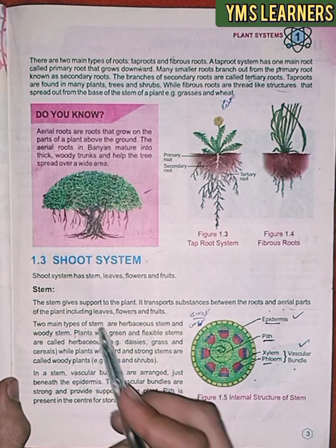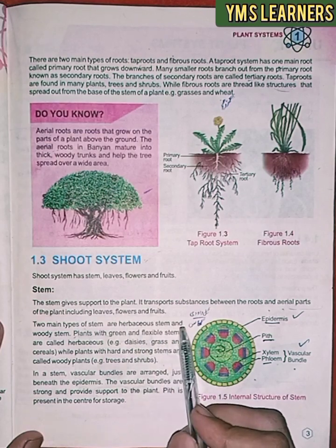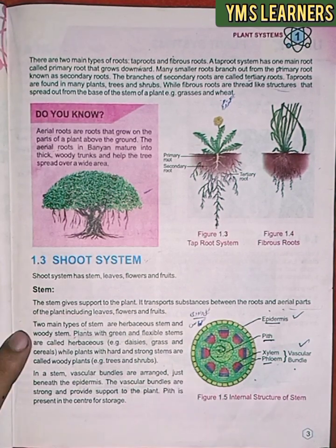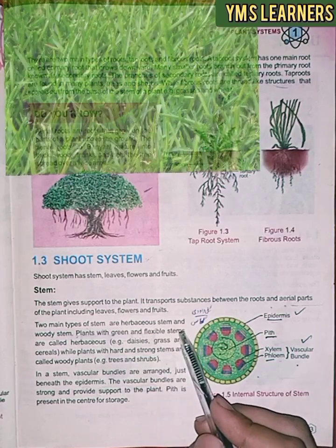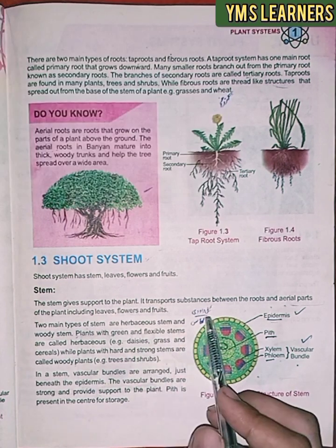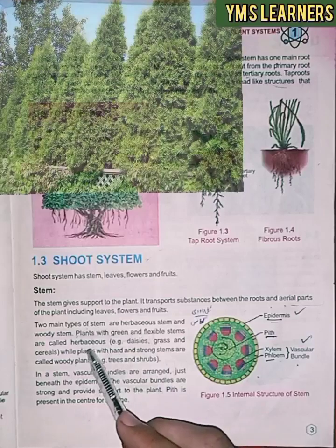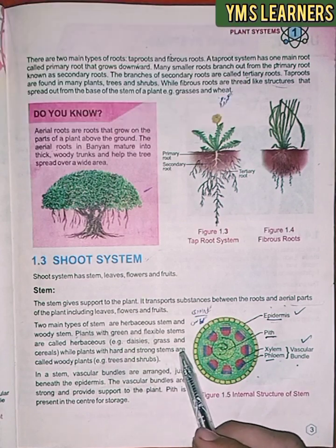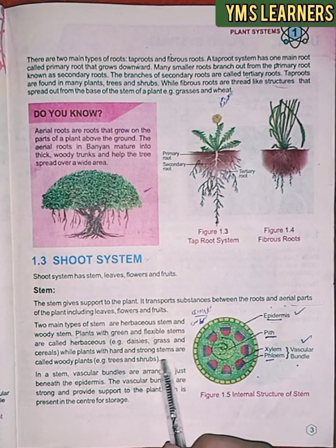The two main types of stem are herbaceous stem and woody stem. Plants with green and flexible stems are called herbaceous. Plants with hard and strong stems are called woody stems. Examples of woody plants are trees and shrubs.